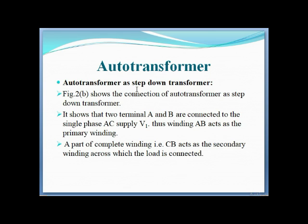As a step-down transformer, as shown in figure one: two terminals A and B are connected to the single-phase AC supply V1, so winding AB acts as the primary winding. A part of the complete winding, that is CB, acts as the secondary winding across which the load is connected.